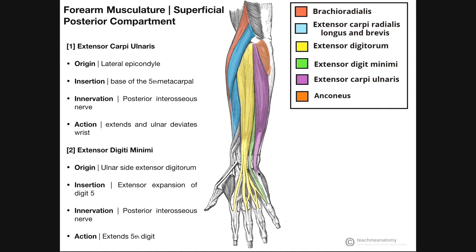It's going to extend the wrist, but it's going to do so on the side of the fifth digit. It's innervated by the posterior interosseous nerve, and because it's able to insert on this side of the wrist, it's also going to facilitate ulnar deviation of the wrist.